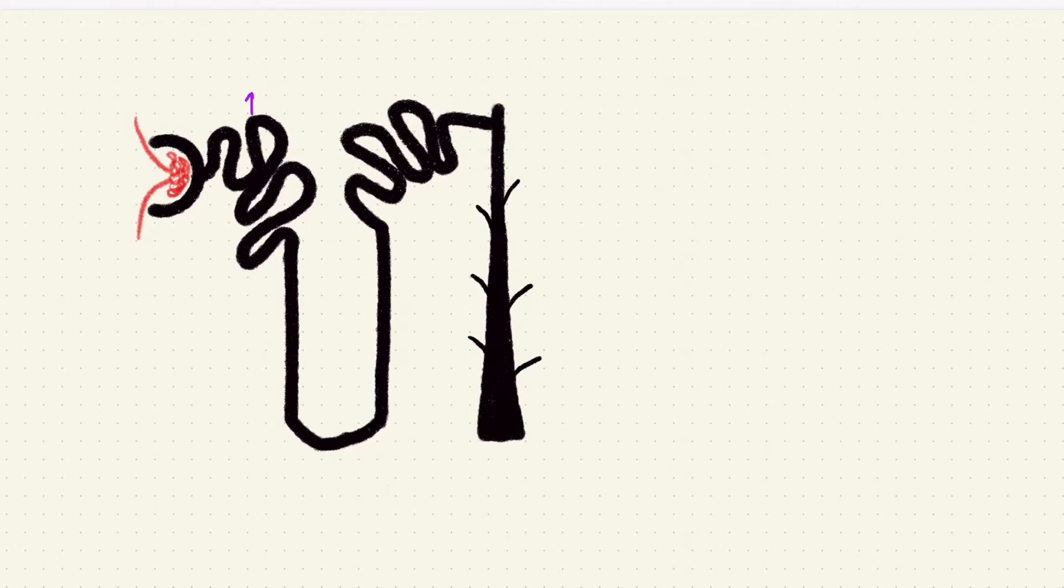The renal tubule consists of the proximal convoluted tubule, the loop of Henle which has three parts, the thin descending segment, a thin ascending segment and a thick ascending limb.